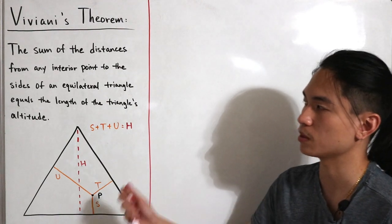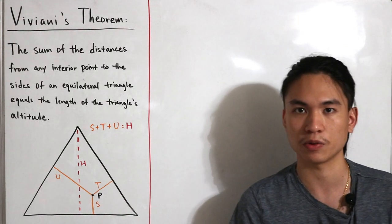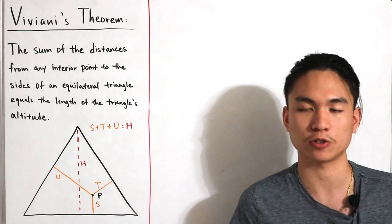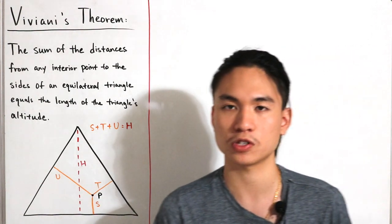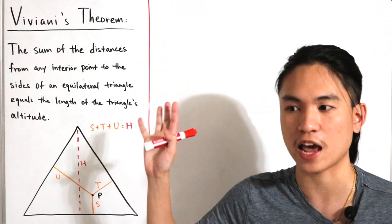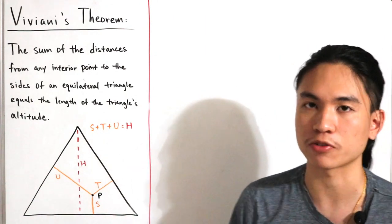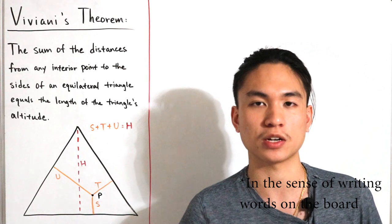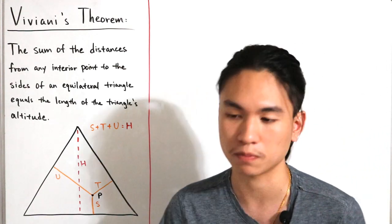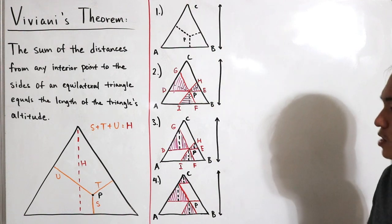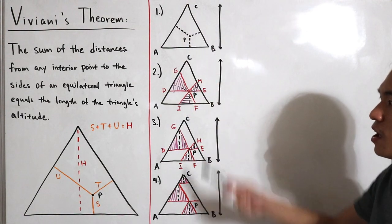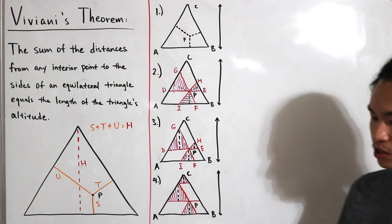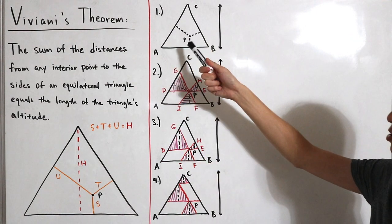Now let's go through both proofs. I'll start with the visual proof. I'll sketch four steps and explain each one at a time, so you can see the picture without needing many words. Give me a moment to sketch these steps. Here are the four steps along with the construction of how it works.